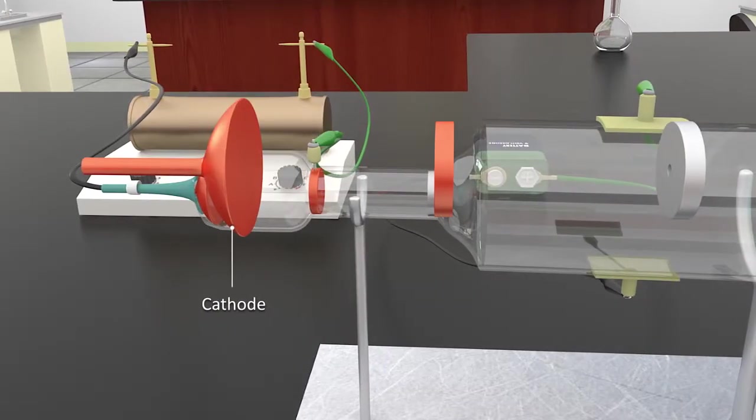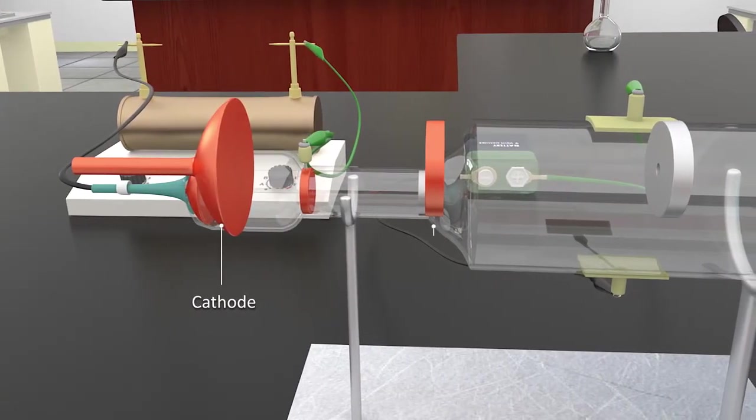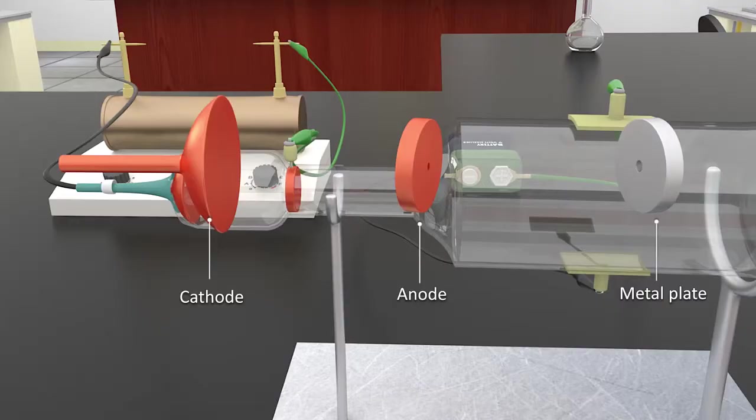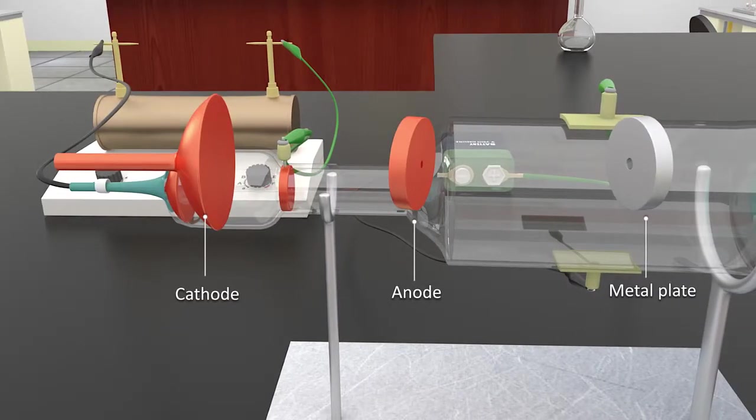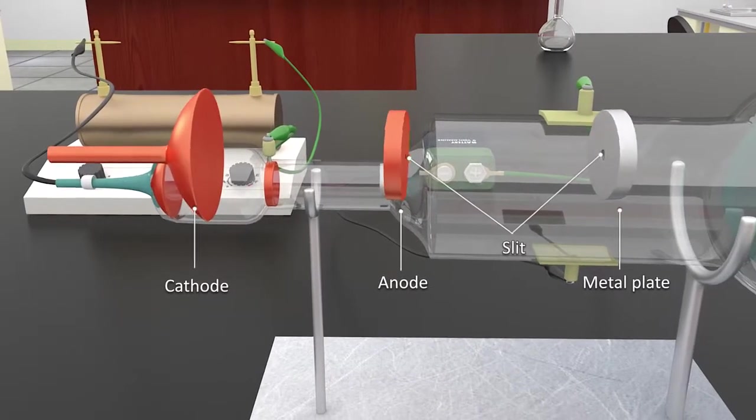with a cathode, an anode, and a metal plate. The anode he used in the experiment had a slit.